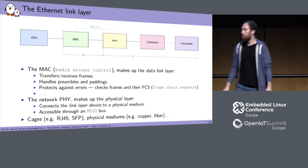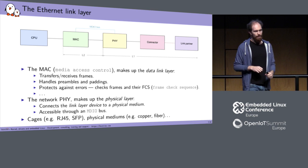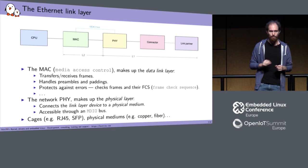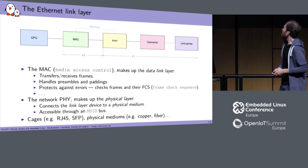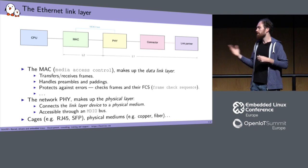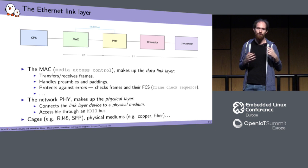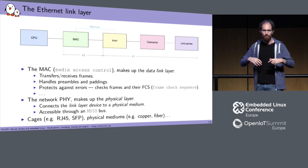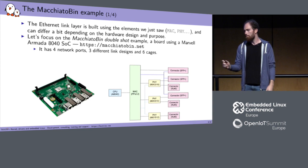The PHY is usually controlled through a bus called the MDIO bus. In many cases it is directly connected to the MAC, but it does not have to be. This is the simplest and most common design of an Ethernet link. You can have a few other constructions — some modifications within this link to handle more advanced or specific cases — and we will see a few examples.